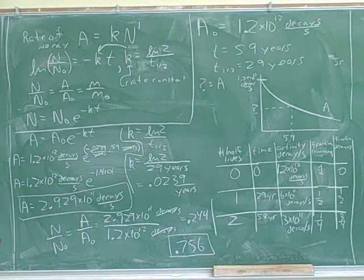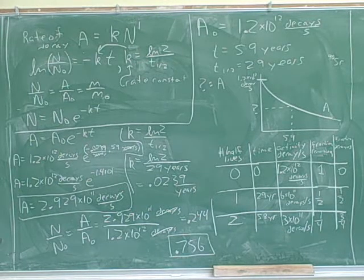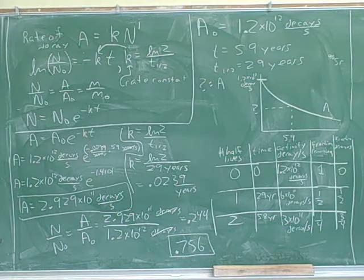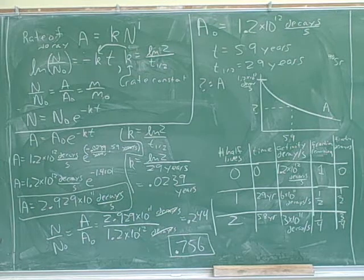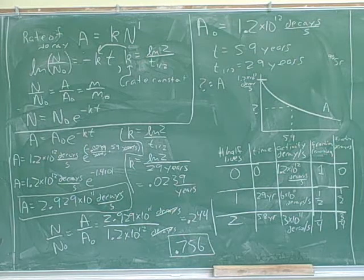This would be a good problem to do. Sodium-24, half-life 15 hours, is used to study blood circulation. The patient is injected with an aqueous solution of sodium-24 chloride whose activity is 2.5 times 10 to the 9 decays per second. How much of the activity is present in the patient's body in excreted fluids after 4 days?